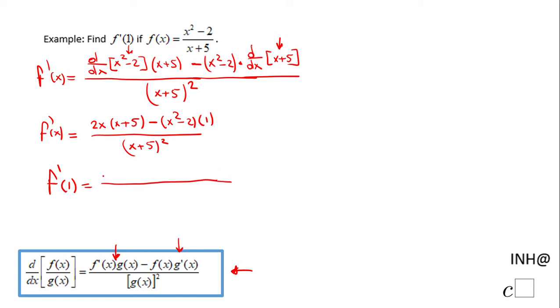We're going to have 2 times 1 times 1 plus 5, minus 1 squared minus 2 times 1, but that doesn't change anything. The denominator here is going to be 1 plus 5 squared.